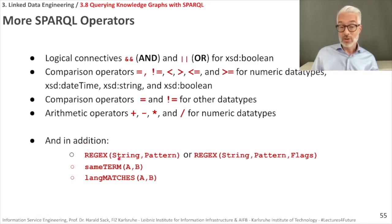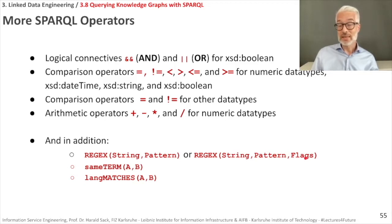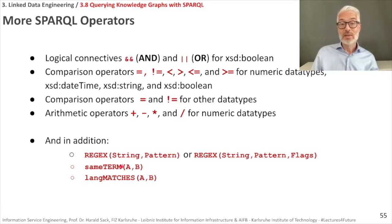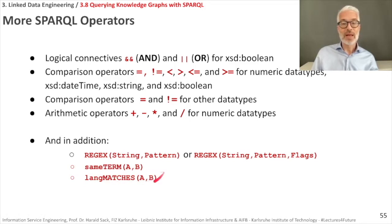For filtering strings you can use regular expressions with the keyword REGEX, giving the string and then the regex pattern in parentheses. You can add flags — for example, to use case-insensitive matching. Additional useful keywords include SAMETERM, which checks equivalence of two terms a and b, and LANGMATCHES, which compares two string expressions to determine if they are in the same language, returning a boolean true or false.